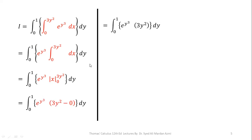So, we have limit from 0 to 1, e raised to power y cubed 3y squared dy. Please note that the derivative of the power of exponential function that is y cubed is 3y squared, which is available here as a multiplier. So, we will integrate this function as e raised to power y cubed.